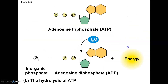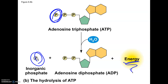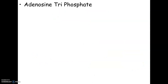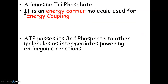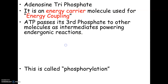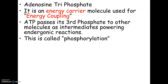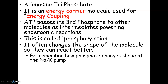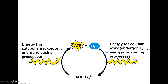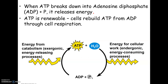ATP takes the energy released from exergonic reactions and brings it to endergonic reactions that require energy. What's really important is that third phosphate — when it breaks off, it releases energy. So ATP, adenosine triphosphate, is an energy carrier: when the phosphate breaks off, it passes energy through energy coupling. This is called phosphorylation when a phosphate attaches to other things, and it often changes the shape of the molecule it attaches to so it can react better. You saw this already in the sodium-potassium pump — when the phosphate broke off ATP and it became ADP, that's what changed the shape of the protein in the pump.